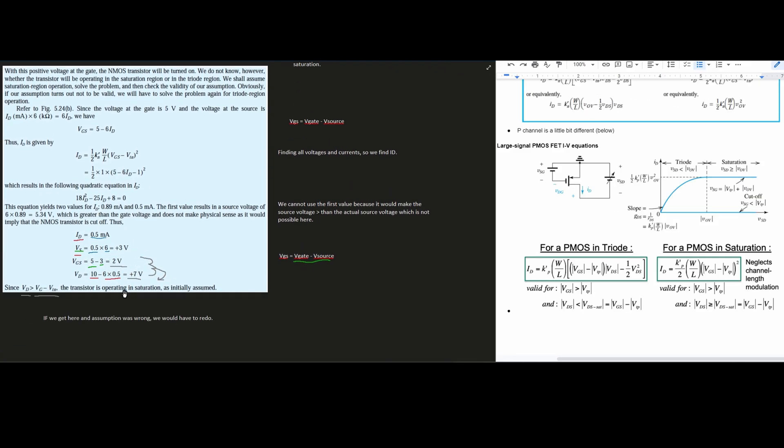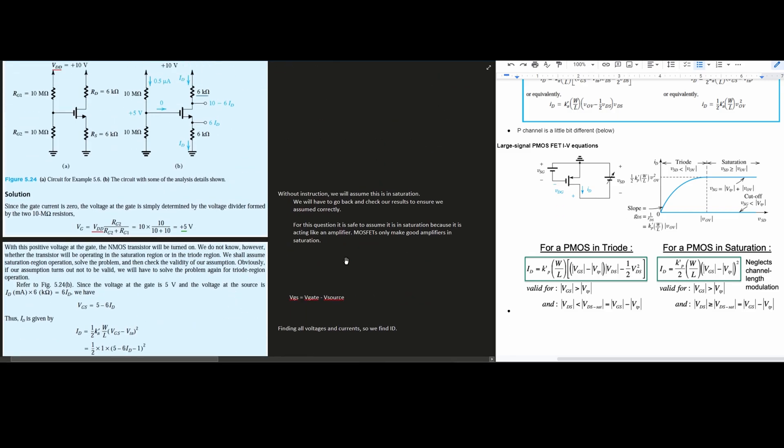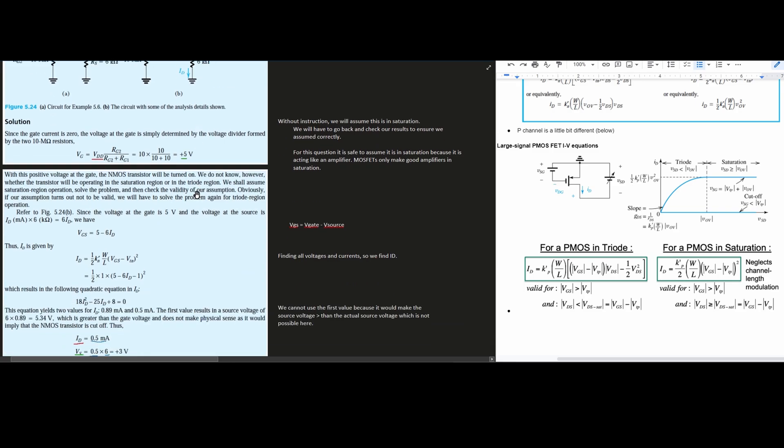So we have this VD, which is our 7 volts, minus our VG, which is 5, minus our VTN, which is 3. So we get 7 volts is greater than 2 volts. And since this is true, our assumption was correct. We were in saturation, and we've solved the problem.